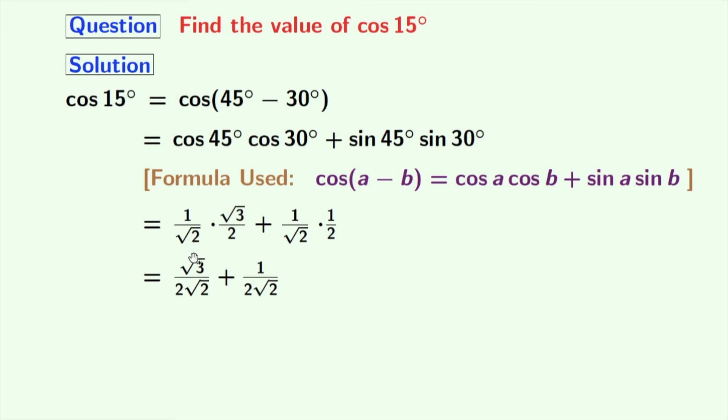Simplifying this, we get √3/(2√2) plus 1/(2√2), which gives us (√3 + 1)/(2√2). This is our final answer. Thank you for watching.